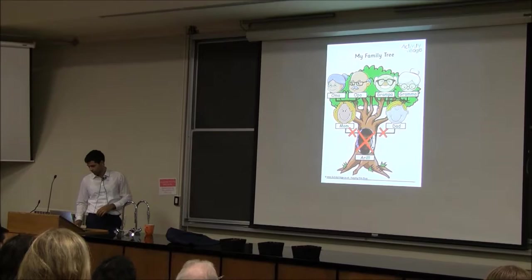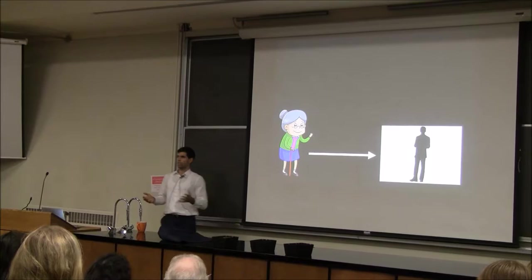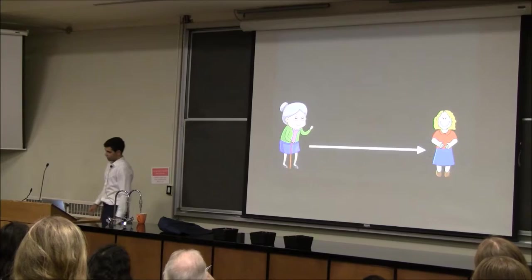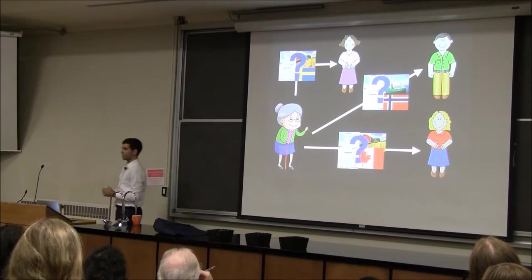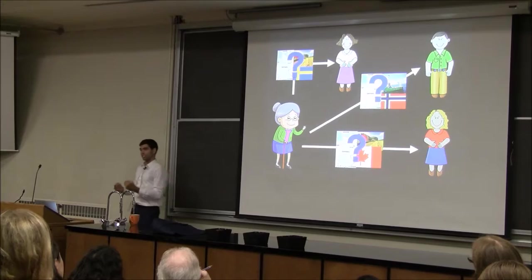If my Oma decides to have a child, the probability that child is going to be someone is 100%. But the probability that the child is going to be my mom specifically is actually very, very small. One could make the argument that there's only a single chain of events that leads to the birth of my mom. If anything had been different, a new person would have been born instead, and it's very unlikely that I would have been born in turn.